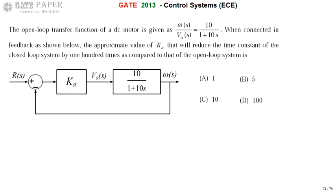We are discussing the GATE 2013 ECE paper. The open-loop transfer function of a DC motor is given as 10 divided by (1 + 10s). When connected in feedback as shown in the diagram, we need to find the approximate value of Ka that will reduce the time constant of the closed-loop system by 100 times compared to the open-loop system.